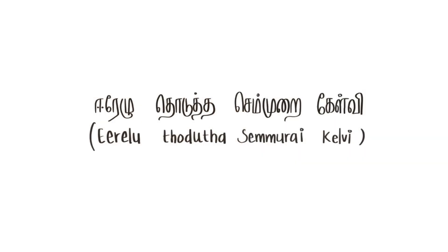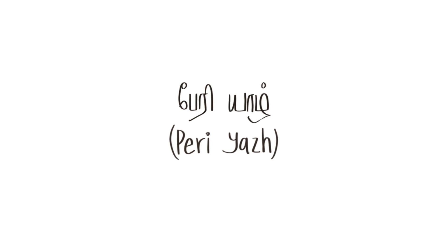Next on the list is sagodayal. Sagodayal has 14 strings and plays two octaves, similar in some way to yal songs. Sagodayal is sometimes referred to as keelvi. There is an extract from a song that talks about how the sagodayal has two sets of seven strings and hence plays two octaves.